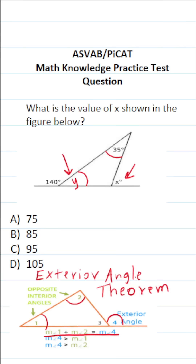I'm going to call it y. You should be able to see that 140 degrees and y make a straight line. Therefore, they are considered supplementary angles, and supplementary angles add up to 180 degrees. So 140 plus y equals 180.